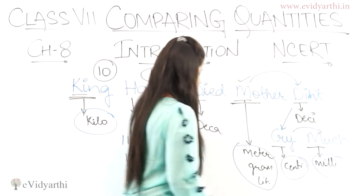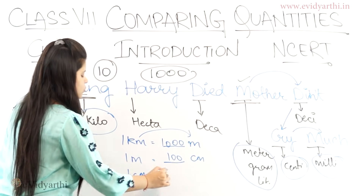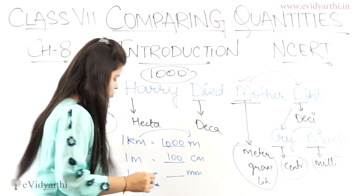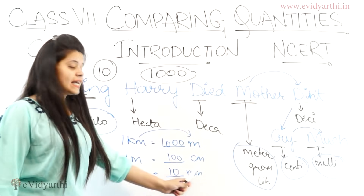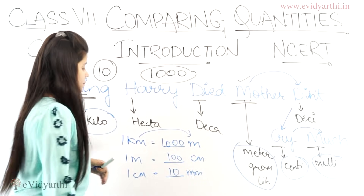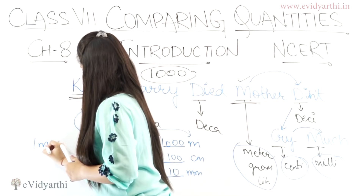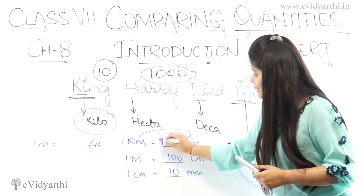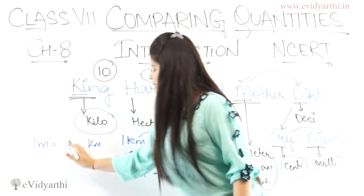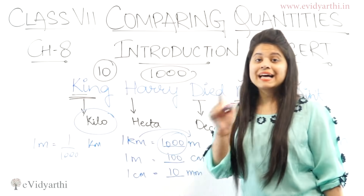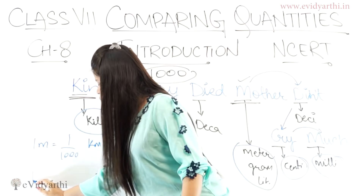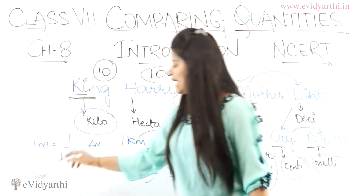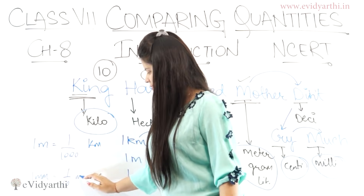Then if I go from centimeter to millimeter — 1 centimeter equals how many millimeters — the difference between centi and milli is 10. So 1 cm = 10 mm. We are still going from big to small, so multiply. Now reverse it: going from small to big. 1 meter equals how many kilometers? The gap is still 1000, but since we are going from small to big, it becomes 1/1000 — we divide. Similarly, 1 millimeter to centimeter: gap is 10, but small to big, so 1/10.